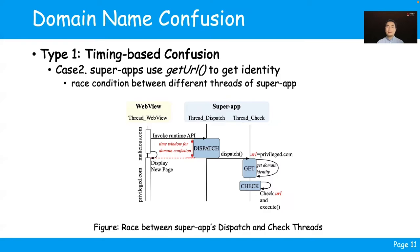Even if the super app uses a real-time API to get the identity, confusion could still happen. To reduce the cost of invoking runtime APIs, the super app often dispatches the call event to another thread asynchronously. In this case, a race will happen when the last API call event hasn't finished but the web content has already navigated to another identity. Thus, when the checker thread tries to get and check the identity, it becomes the privileged one, despite the fact that the core event originated from malicious.com.